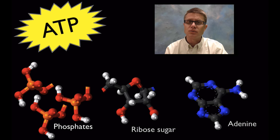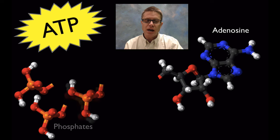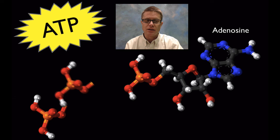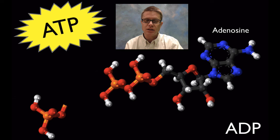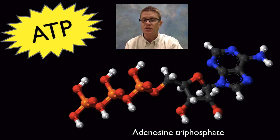The adenine and the ribose are attached together and form a chemical called adenosine. If we add a phosphate to that, we have AMP or adenosine monophosphate. Adding another phosphate gives us adenosine diphosphate or ADP. And if we add that third phosphate, we now have ATP, or adenosine triphosphate.